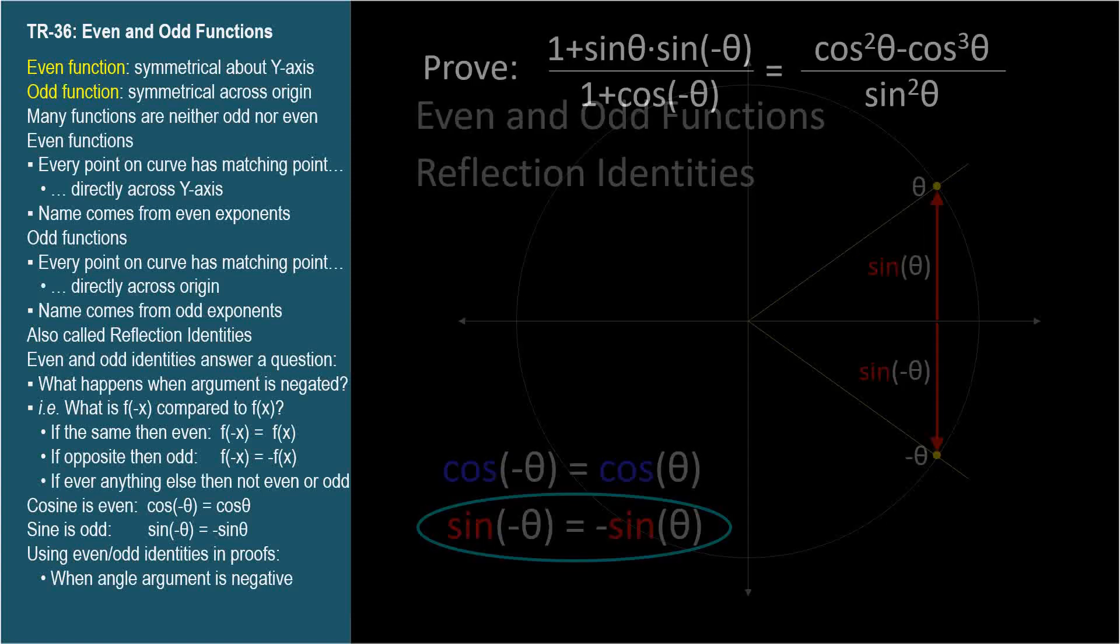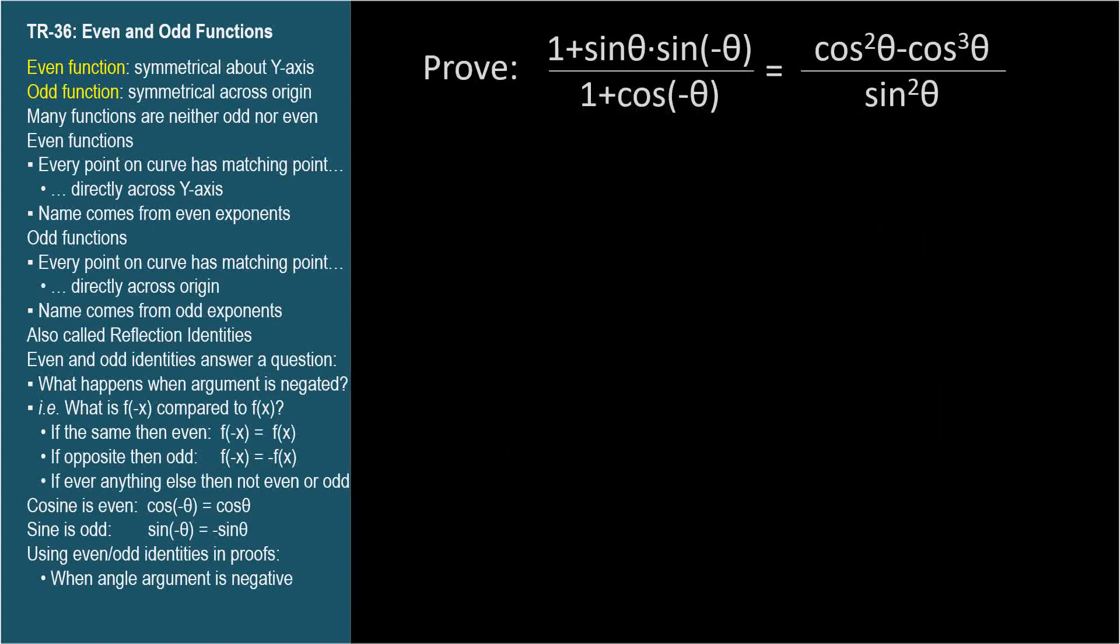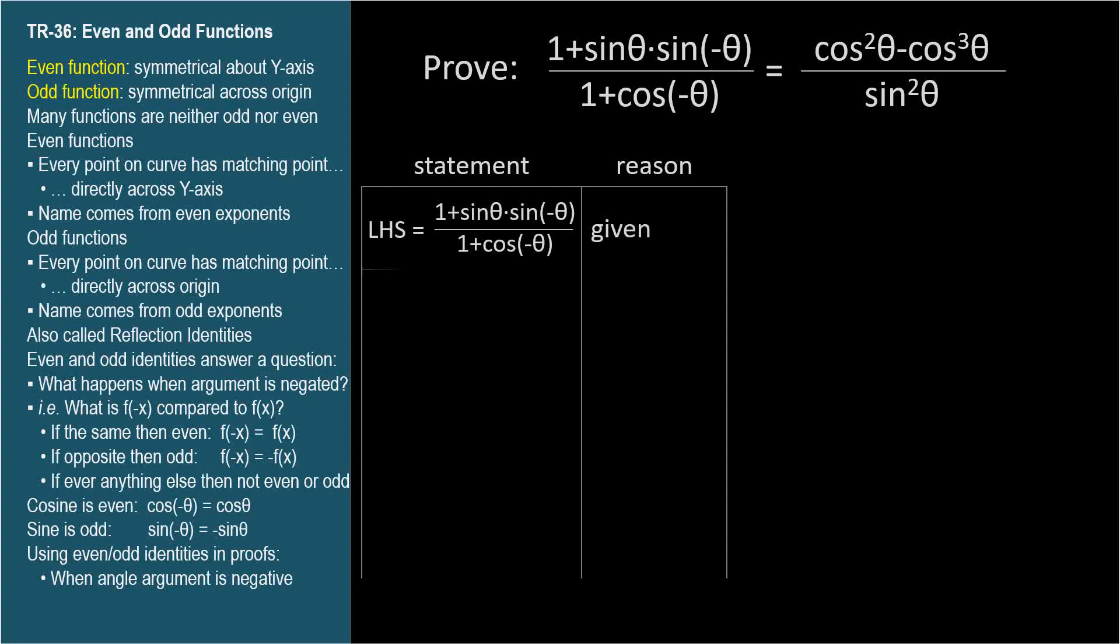Let's do a proof. Prove 1 plus sine theta times sine negative theta all over 1 plus cosine negative theta equals cosine squared theta minus cosine cubed theta all over sine squared theta. Well, the left-hand side looks a little more complex. At least it has more terms, so let's start there. Also, the negative thetas are strong hints that we'll use reflection identities.